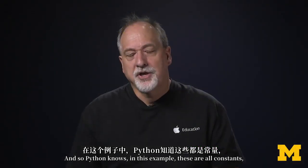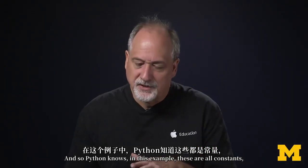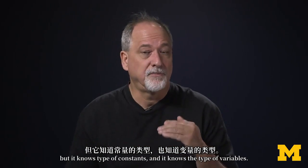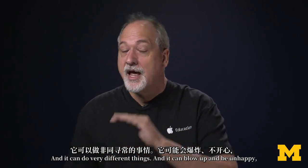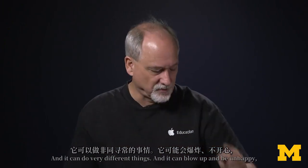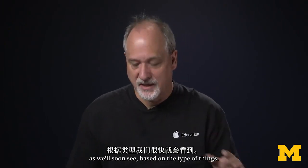And so Python knows the type of, in this example, these are all constants. But it knows the type of constants, and it knows the type of variables. And it can do very different things. And it can blow up and be unhappy, as we'll soon see, based on the type of things.